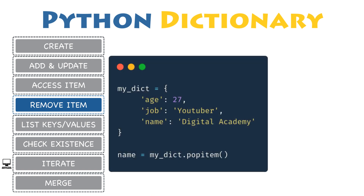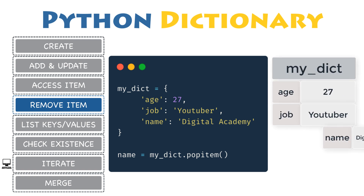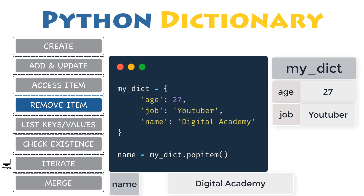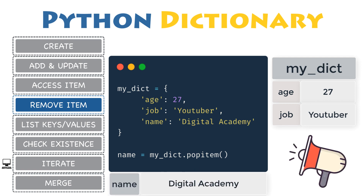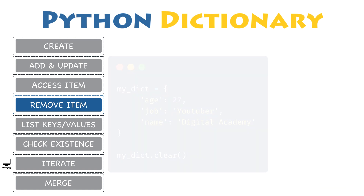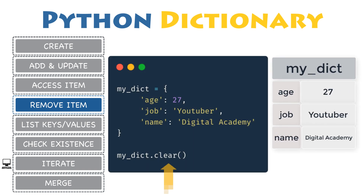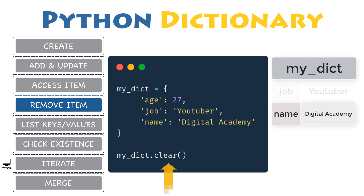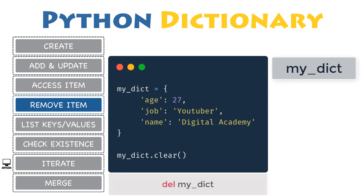Sometimes you need to iterate through a dictionary and delete its items sequentially. To do this, use the popitem() function, which removes and returns the last inserted item. Note that in Python versions before 3.7, popitem() removes a random item, not necessarily the last inserted. All items can be removed at once using the clear() method, which deletes all keys and values. You can also use the del keyword to remove the entire dictionary itself.